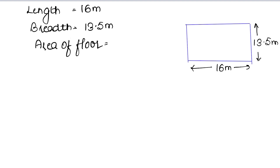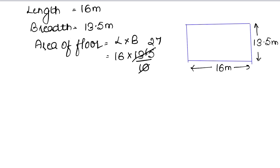Area of floor = length × breadth = 16 × 13.5. Calculating: 16 × 13.5 = 216 square meters. So our area of floor is 216 square meters. Now our carpet is 75 cm wide and the cost to lay it is Rs. 60 per meter.